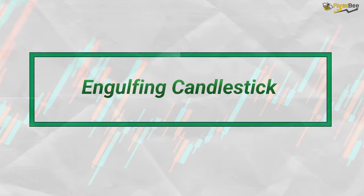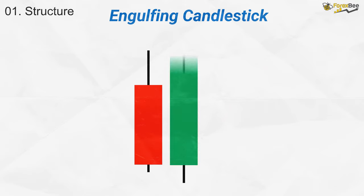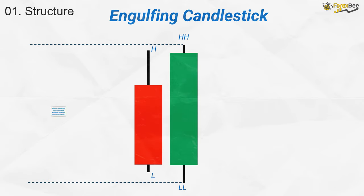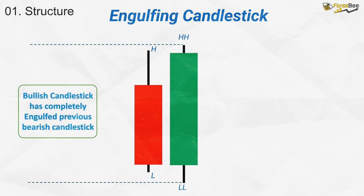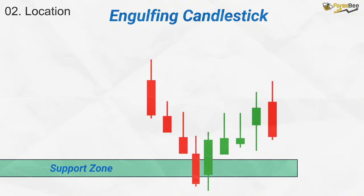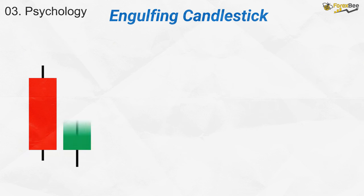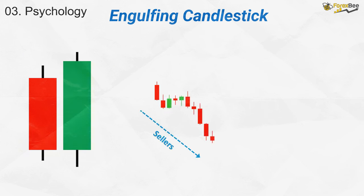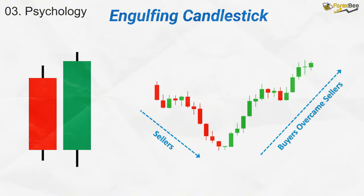Let's talk about the engulfing candlestick pattern. The structure of an engulfing pattern consists of two candles. This is a bullish engulfing candle because the bullish candlestick completely engulfs the previous candle by forming a higher high and a lower low. An engulfing candlestick often forms at the end of a trend. Here we can see the market moving in a bearish direction, followed by the formation of a bullish engulfing candlestick pattern at a support zone. Psychologically, the bullish engulfing candlestick pattern represents a momentum reversal from sellers to buyers, which is why the market trend changes from bearish to bullish.